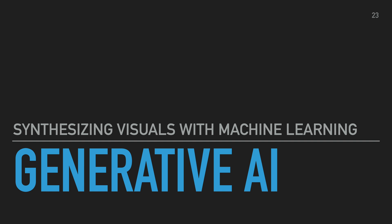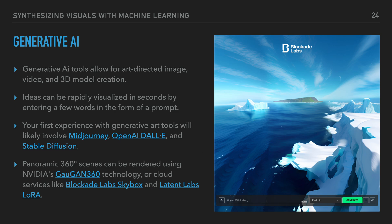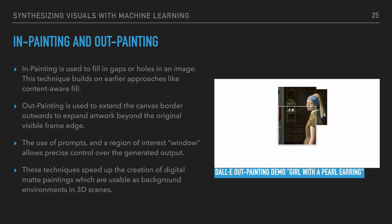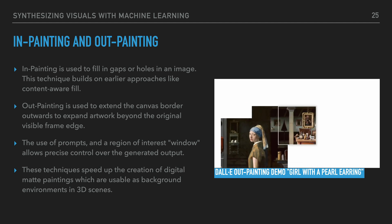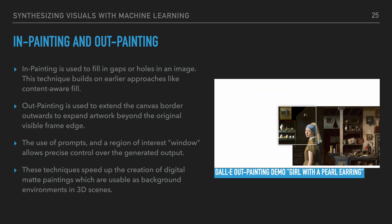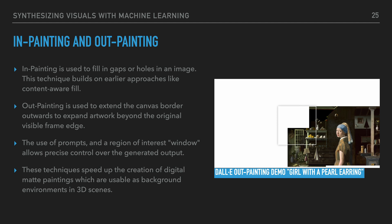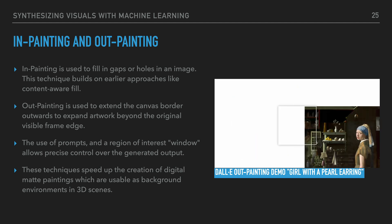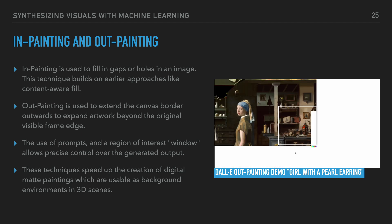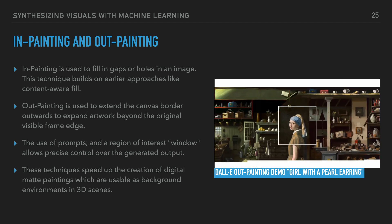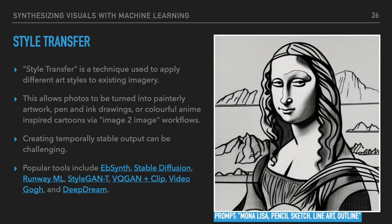Generative AI: Synthesizing visuals with machine learning. Generative AI tools allow for art-directed image, video, and 3D model creation. Ideas can be rapidly visualized in seconds by entering a few words in the form of a prompt. Your first experience with generative art tools will likely involve Midjourney, OpenAI DALL-E, and Stable Diffusion. In-painting is used to fill in gaps or holes in an image, building on earlier approaches like content-aware fill. Outpainting is used to extend the canvas border outwards to expand artwork beyond the original visible frame edge. The use of prompts and a region of interest window allows for precise control over the generated output. These techniques speed up the creation of digital matte paintings usable as background environments in 3D scenes. Style transfer is a technique used to apply different art styles to existing imagery, allowing photos to be turned into painterly artwork.